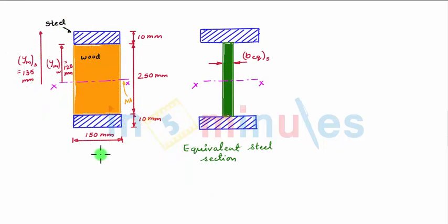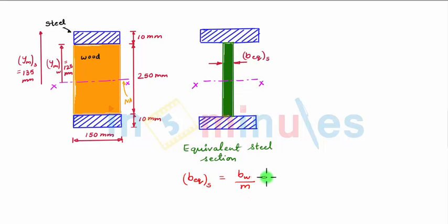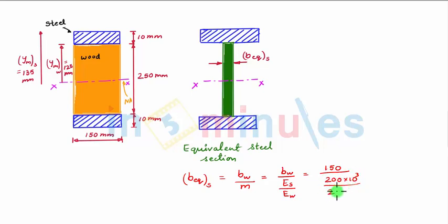We convert this composite wooden-steel section into an equivalent steel section by reducing the width of wood, given by the formula: B (width of equivalent steel) = width of wood / M, which is equal to width of wood × Es / Ew. This equals 150 mm × (200×10³) / (20×10³), giving an equivalent width of the steel part as 15 mm.